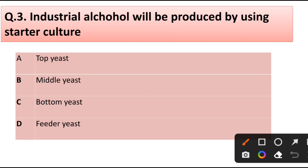Question number 3. Industrial alcohol will be produced by using starter culture: top yeast, middle yeast, bottom yeast, or feeder yeast. Correct answer is option C, bottom yeast.